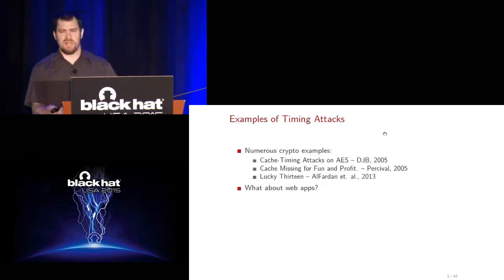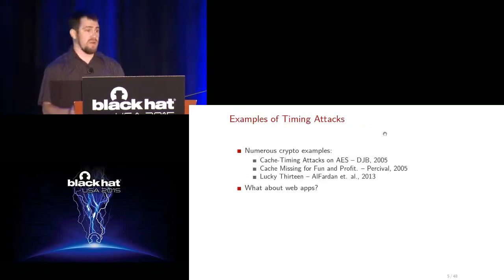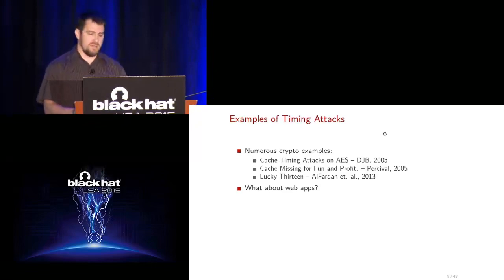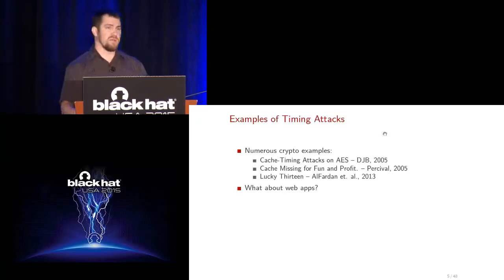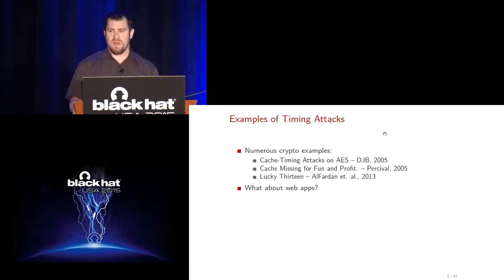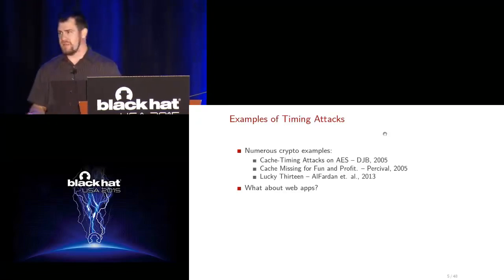There's been plenty of research in the past on timing attacks in the area of cryptography, with demonstrated exploits against specific ciphers but also against more complex crypto systems like SSL. There's a lot of background research in this area, but it's mostly in cryptography. But what about your everyday web application? When does this stuff actually matter?